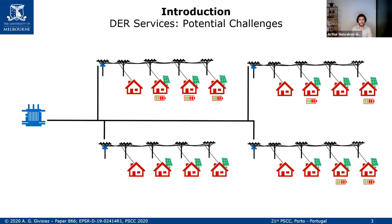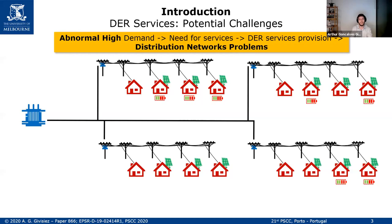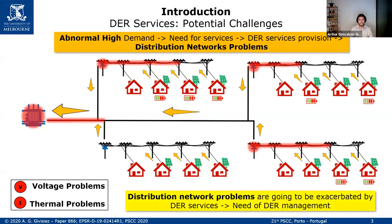I will present the challenge of services with this small network. Here we have a medium voltage feeder with four low voltage feeders as well. There are houses with PV and batteries, and we are considering that they can provide service to the TSO. Let's imagine an abnormal high demand situation — for example, here in Australia during summer, there are days with more than 40 degrees and everyone turns on their air conditioning units, so the system needs services. These houses are going to provide service all at the same time, and this will bring distribution network problems as you can see on the illustration.